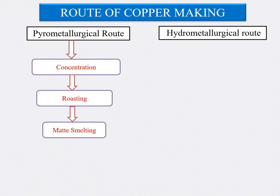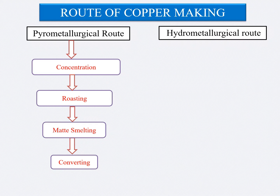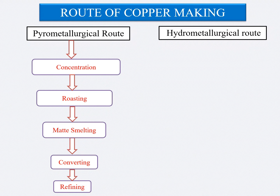The next stage is converting, in which iron, sulfur, and other impurities from the matte are removed. A side-blown converter is used for this purpose. The product of this stage is blister copper, which contains 98.5 to 99 percent copper. After this, electrolytic refining of the impure copper is done for the production of pure copper.